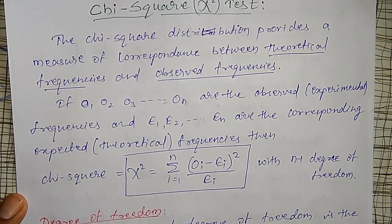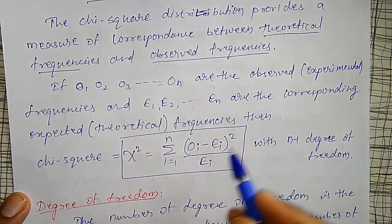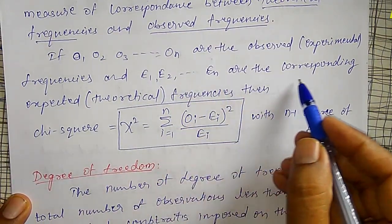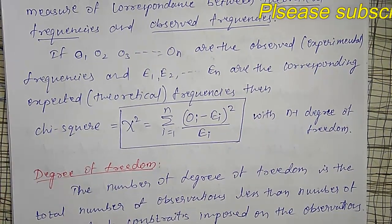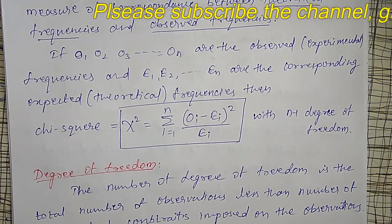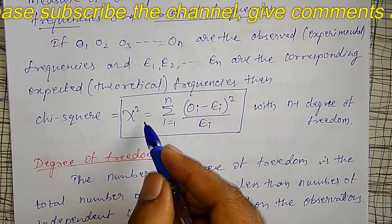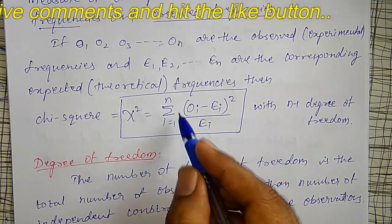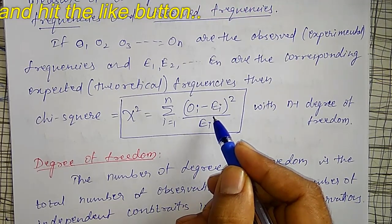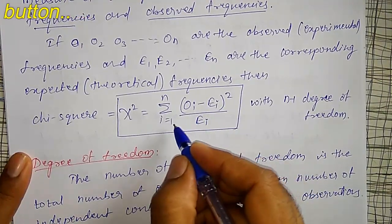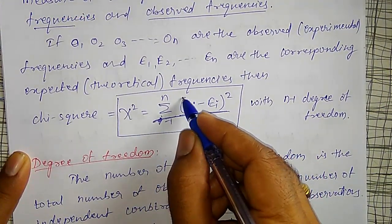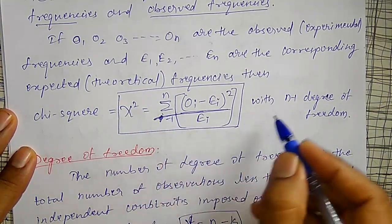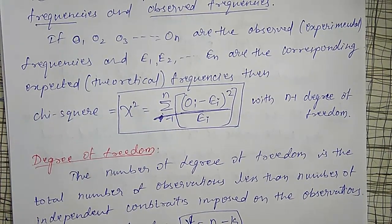How do we calculate the chi-square value? If O1, O2, O3, ..., ON are the observed (experimentally obtained) frequencies, and E1, E2, ..., EN are the corresponding expected (calculated or theoretical) frequencies, then chi-square is given by: chi-square equals the summation from i=1 to n of (Oi minus Ei) squared divided by Ei. The degree of freedom is n minus 1 for a series.